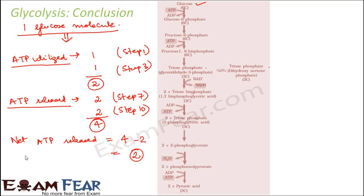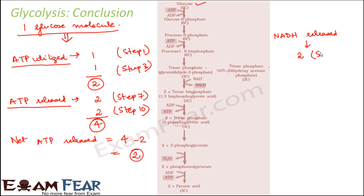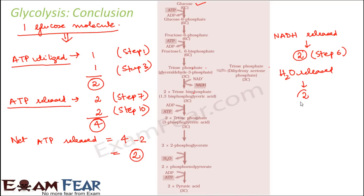Other than ATP, few other things were formed. NADH released — 2 NADH were released in step 6. Water was also released during the process of hydrolysis in step 9 — 2 molecules of H2O were released.